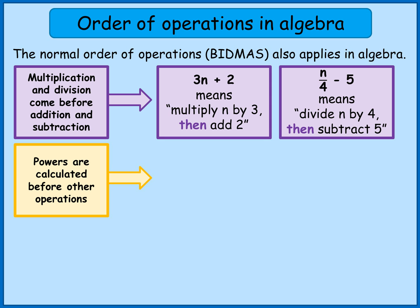Just like when I'm using BIDMAS for number calculations, when I'm working with algebra, I still calculate any powers first. So that means if I have something like N squared plus 3, I would first of all square the N and then I would add on 3.